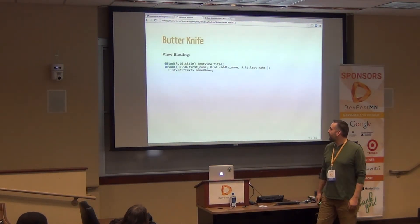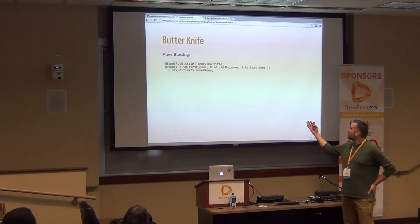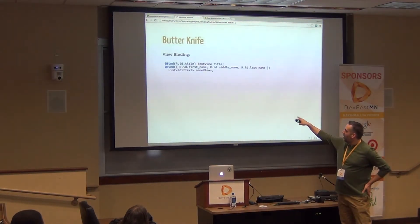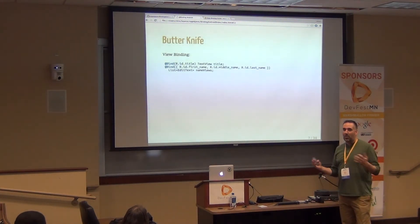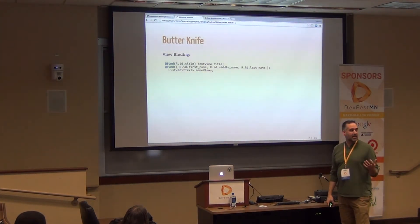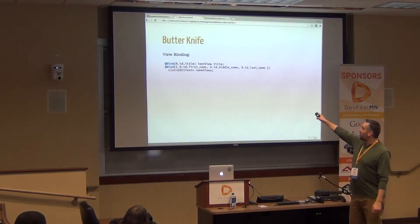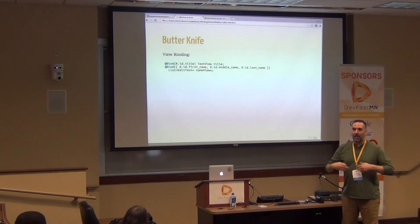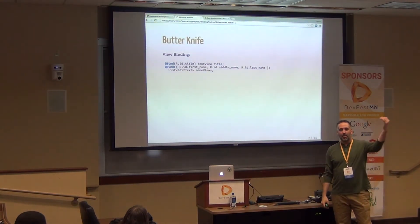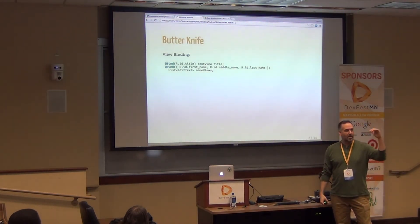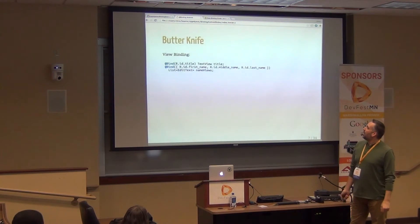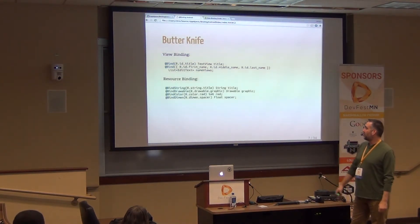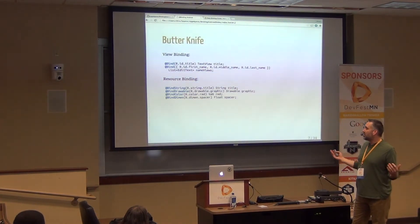Butterknife allows you to bind views with literally one annotation. You basically say that member variable should get the view with this ID. Once it's bound, it's just going to be there — no find-by-ID needed. Another nice feature is that you can bind into lists of views. So if you have a bunch of related views, like filling out an address form, you can just bind all the views into an address collection. You can also bind resources — strings, drawables, colors, dimensions — and once bound to an activity, fragment, view holder, or custom view, those resources will instantly populate those fields.